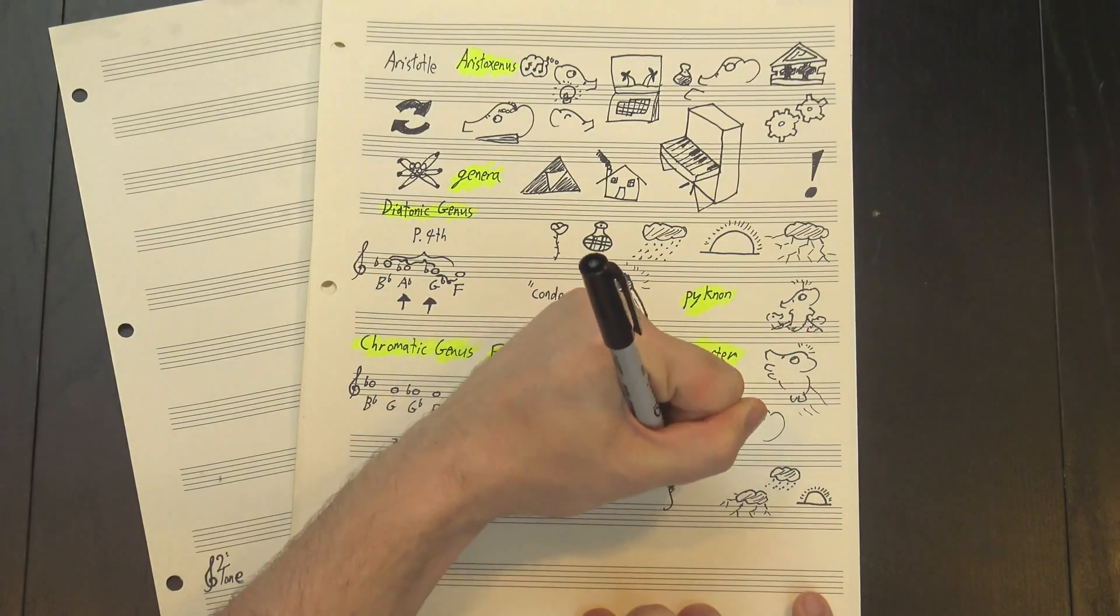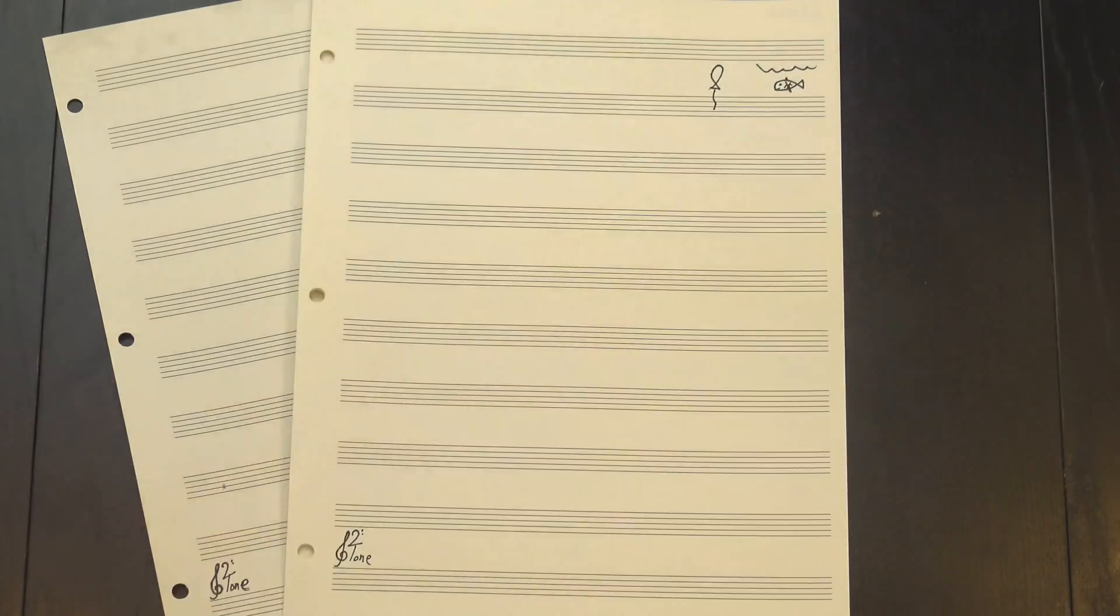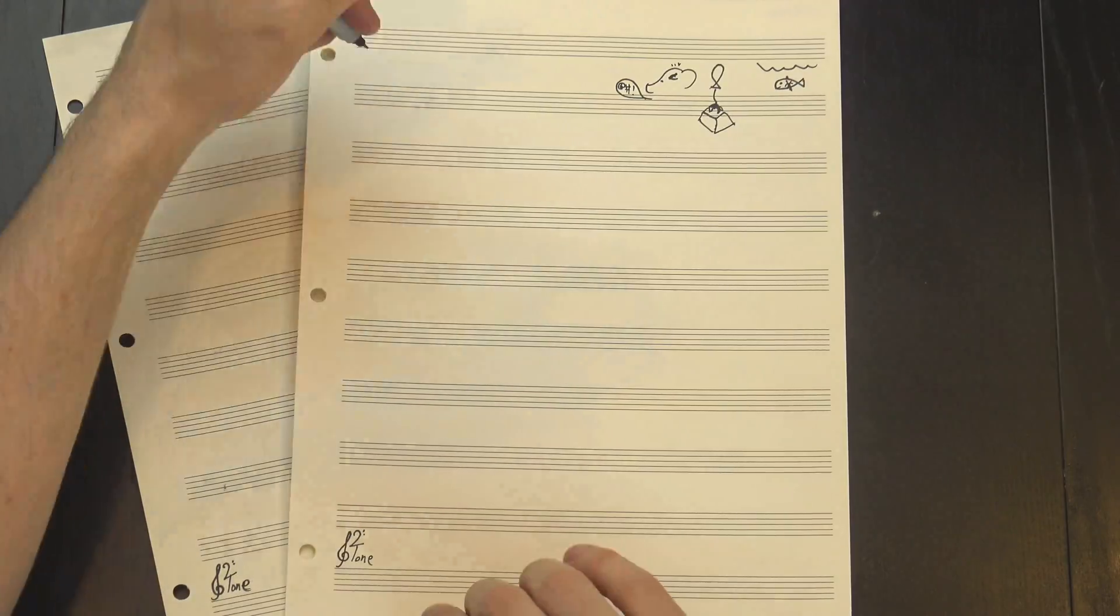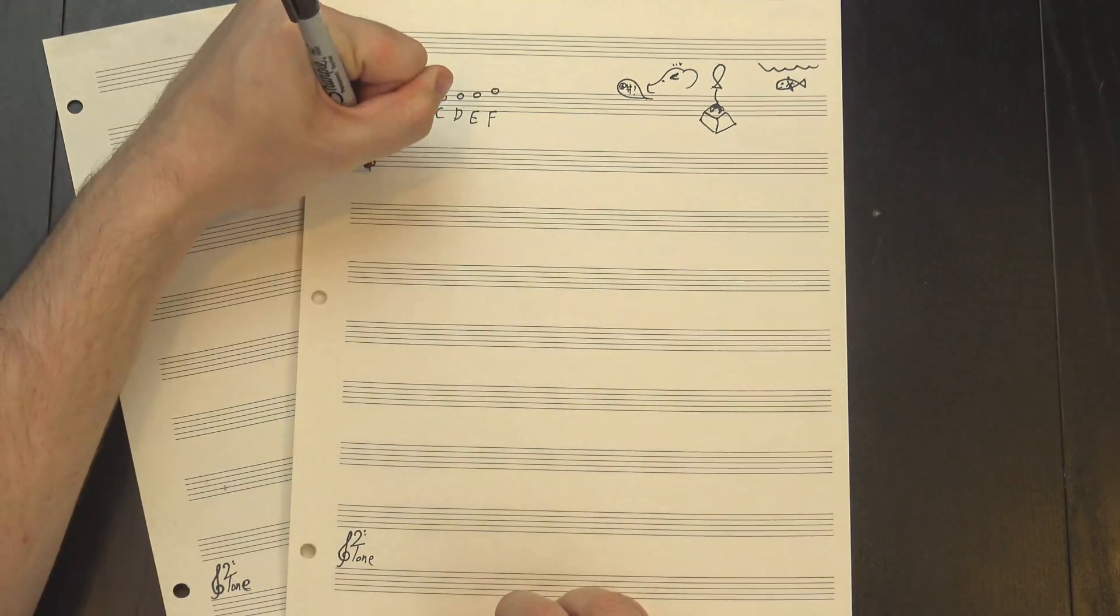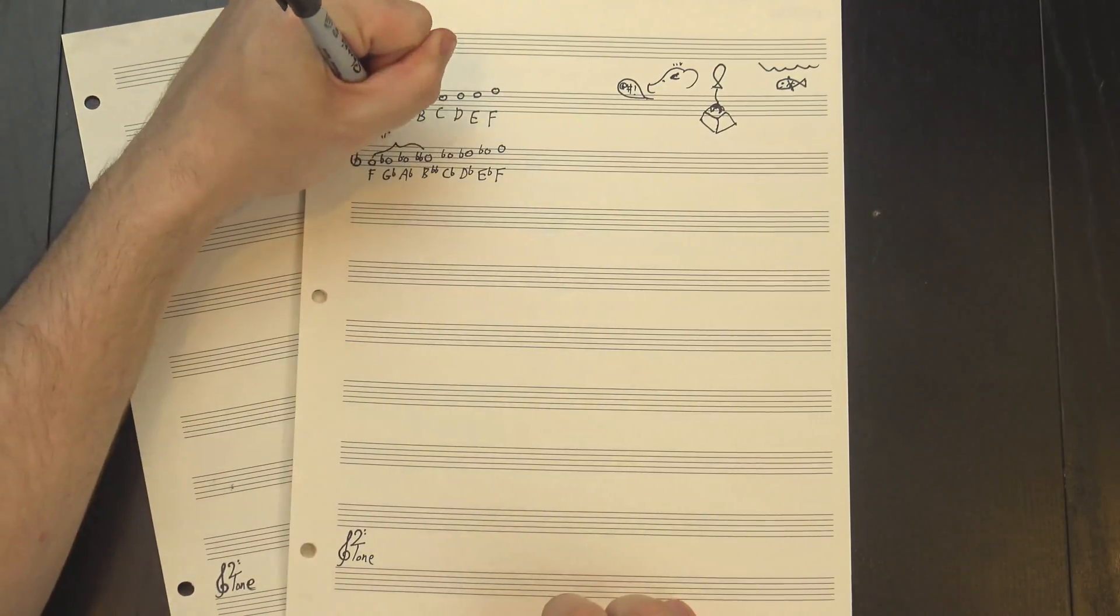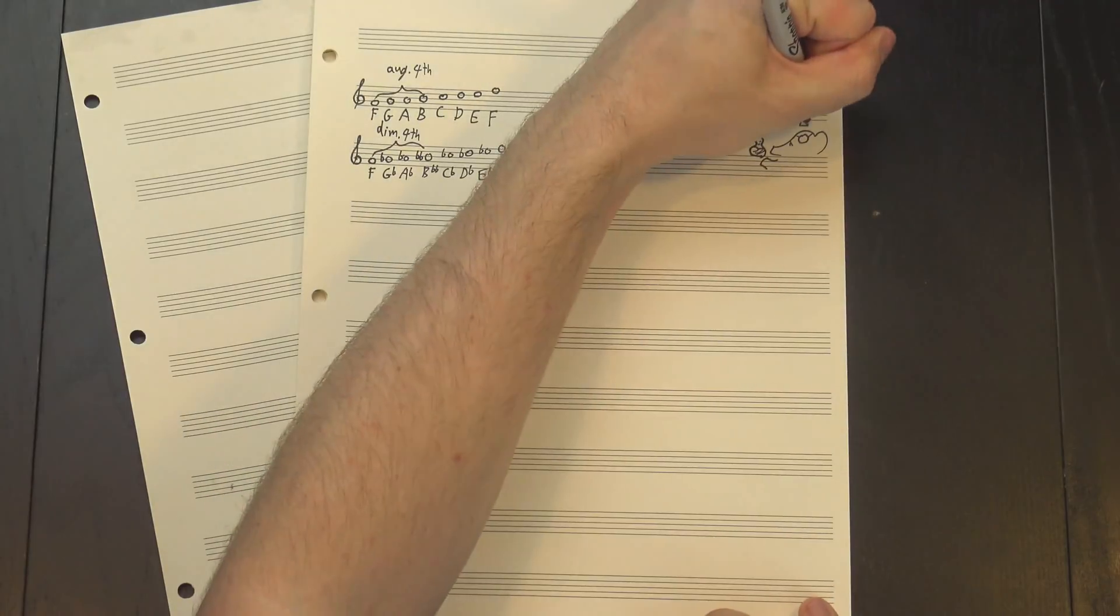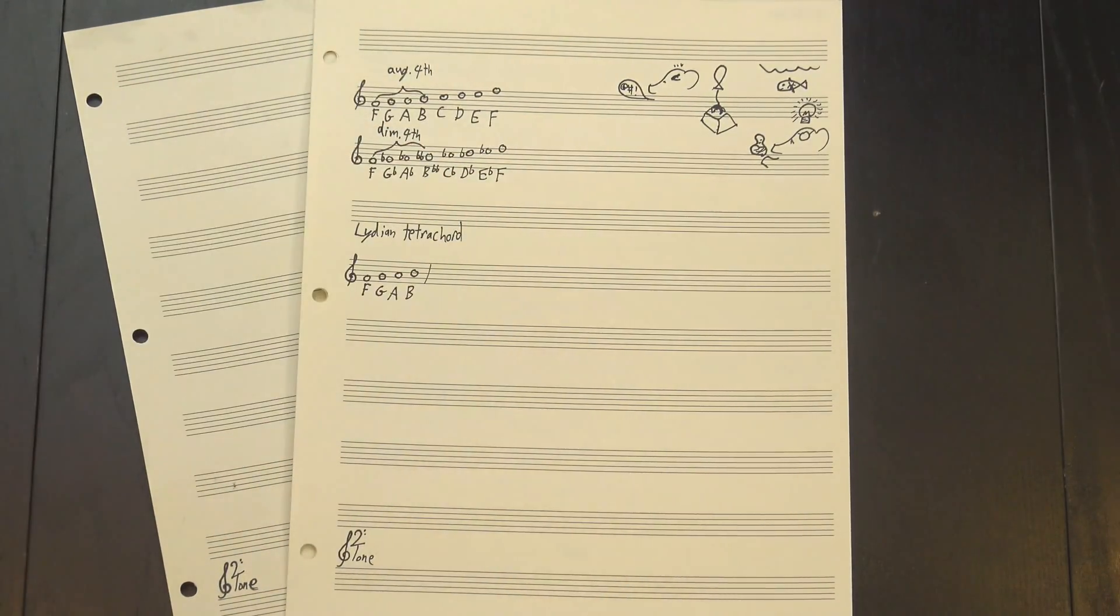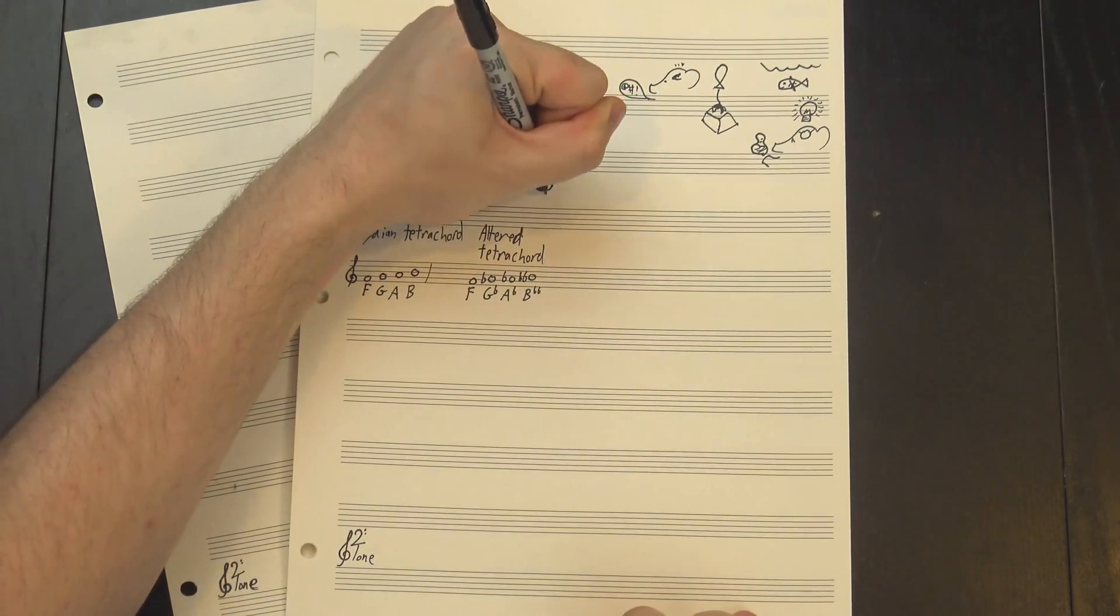But his system assumed that every scale should have notes a perfect fourth above and below the root, and while most of the popular ones still do, some are a little less cooperative. For example, Lydian has an augmented fourth, and Altered has a diminished one. This means we need to name new tetrachords in order to accommodate these scales, and we might as well name them after the scales they come from, so the Lydian tetrachord is all whole steps, and the Altered tetrachord is like the Phrygian one, but smaller.